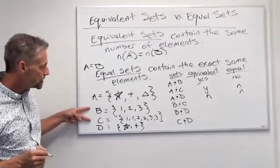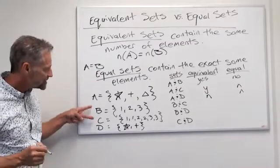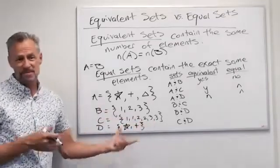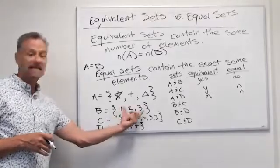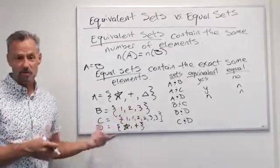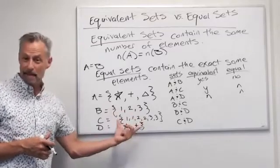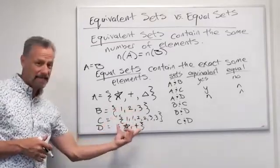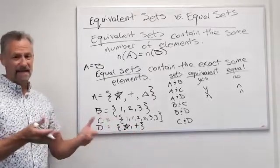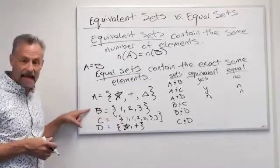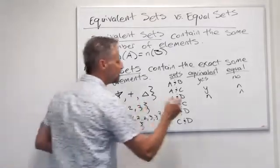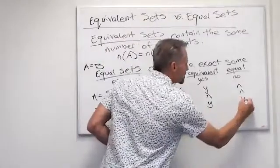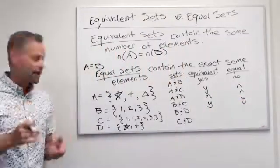B and C — the set {1, 1, 2, 2, 3, 3} is the same as the set {1, 2, 3}. So these are in fact equivalent because their cardinality is both three. They have three distinct elements and they have the same elements in them. They don't look exactly equal because we repeated the numbers, but they are equal because set C can be written the same as set B — they're the same set. So yes, they're equivalent, same number of unique elements: 3. And yes, they're equal because they have the exact same elements in them.